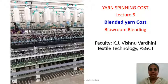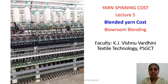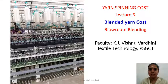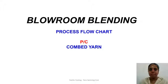Welcome to the fifth lecture in spinning mill cost — yarn costing. The topic is to determine the cost of blended yarn: polyester-cotton blended yarn. The blending is done through blow room blending. Let us see what blow room blending is, and we will look at the process flow chart of a polyester-cotton yarn.